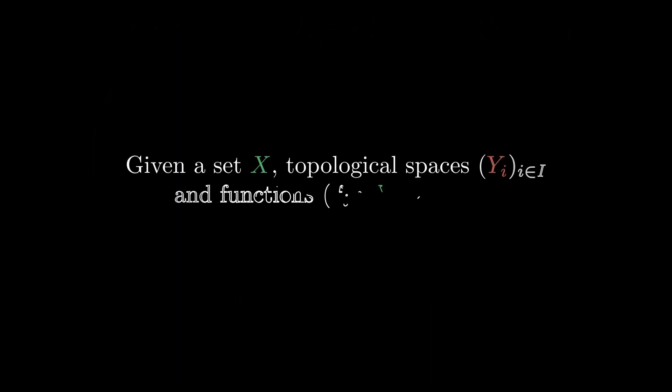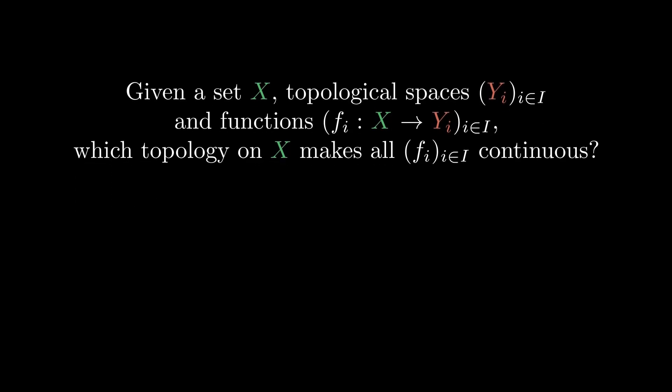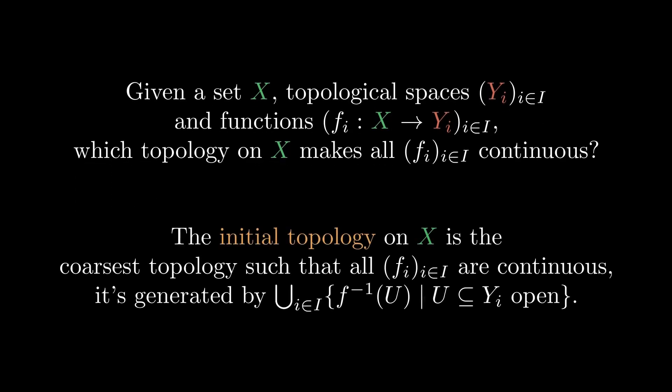More generally, we can consider multiple spaces y_e and functions f_e. Then we can once again find the coarsest topology on x such that all functions are continuous. This topology is generated by the preimages of all open sets in all spaces. Let's now look at some examples.